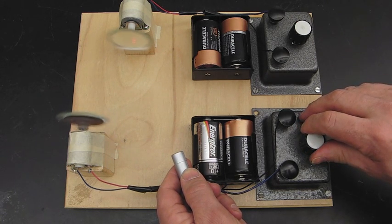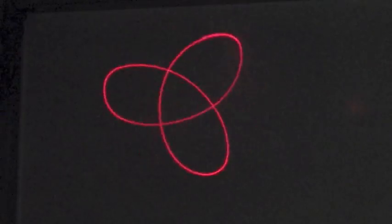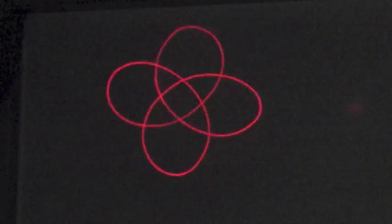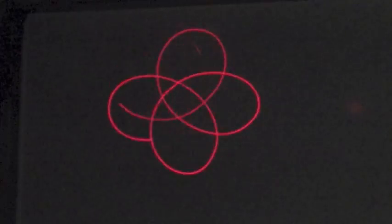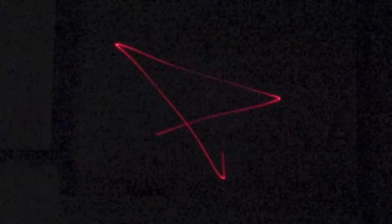The fun part is when we adjust the speeds to see what kind of patterns we can design. Stable patterns are formed when the speed of the motors becomes a ratio of two whole numbers. If we change the ratio of speeds from one motor to another, we end up seeing different patterns formed on the wall.